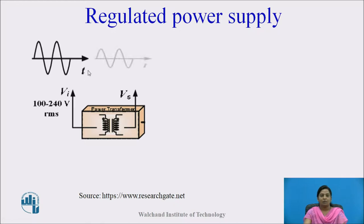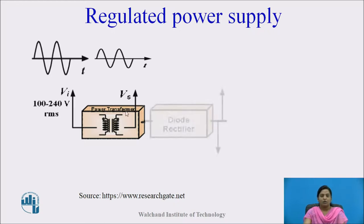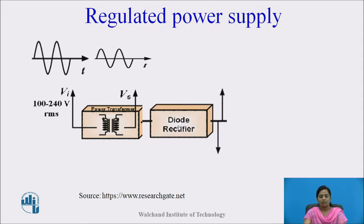In this example, a step-down transformer is used which converts the high-level AC voltage into low-level AC voltage. The next block is the rectifier — a circuit consisting of a number of diodes used for rectification, which means converting the AC signal (alternating current) into DC quantity.